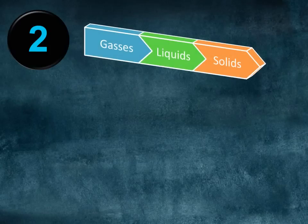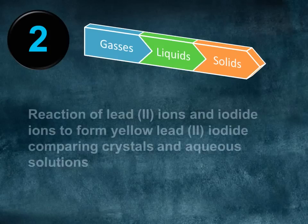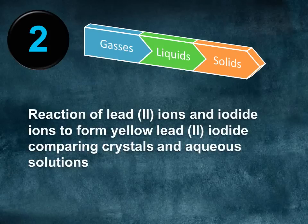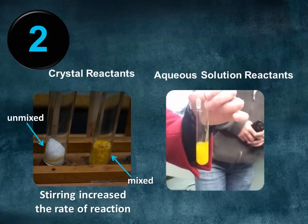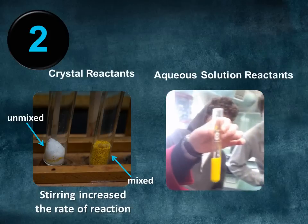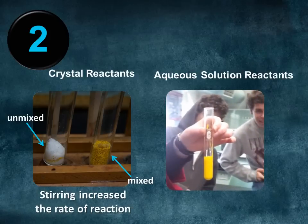Gases tend to react faster than liquids, which react faster than solids, as it takes energy to separate particles from each other. Because of this, the state of the reactants is a factor affecting reaction rate. This is demonstrated by comparing crystal and aqueous solutions of the reaction of lead ions and iodide ions to form yellow lead iodide. The aqueous solution reacted instantaneously, much faster than the crystals.